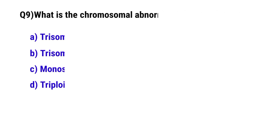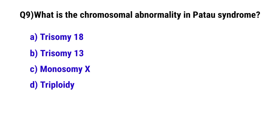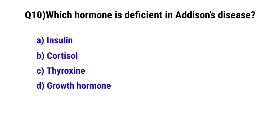Question number 9: What is the chromosomal abnormality in Patau syndrome? The correct option is B: Trisomy 13. Question number 10: Which hormone is deficient in Addison's disease? The correct option is B.